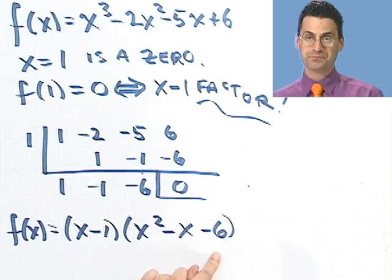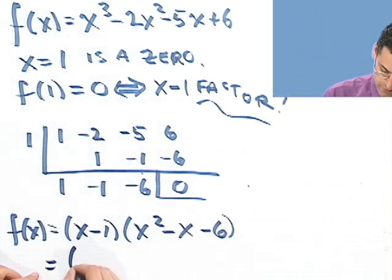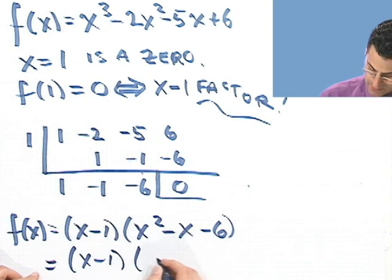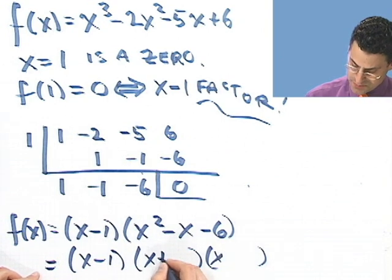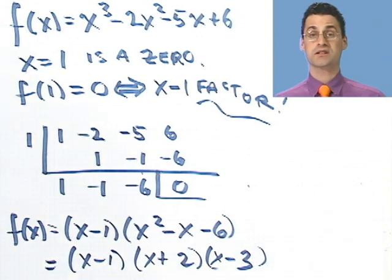Now all I've got to do is see if I can factor that. So you can try to factor. I think we'll have better luck here. x, x. Opposite signs, plus, minus. How about 3 and 2? Looks good to me.